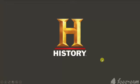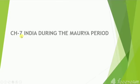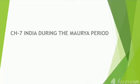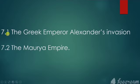Good morning students. Today in history subject we will see chapter number seven: India during the Maurya period. In this chapter we are going to see how India was in the Maurya period, the dreams of Emperor Alexander to conquer the world, and where he halted in India. Afterwards we will see the Chandragupta Maurya story. We will cover section 7.1 on Alexander's invasion and 7.2 on the Maurya Empire.